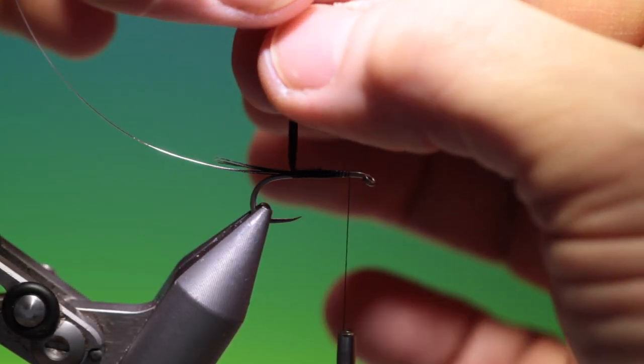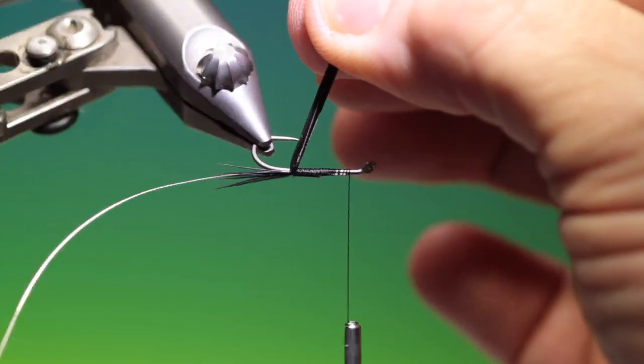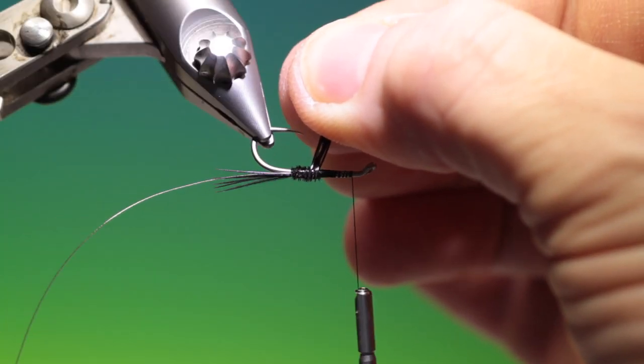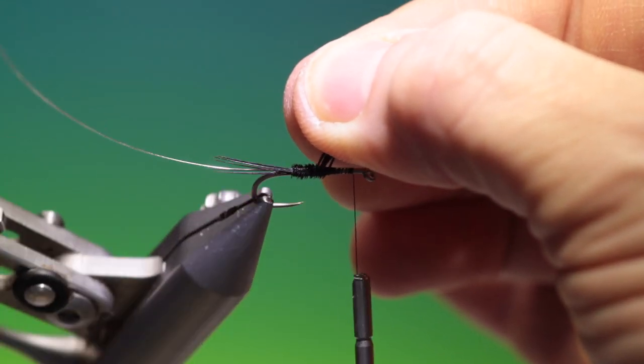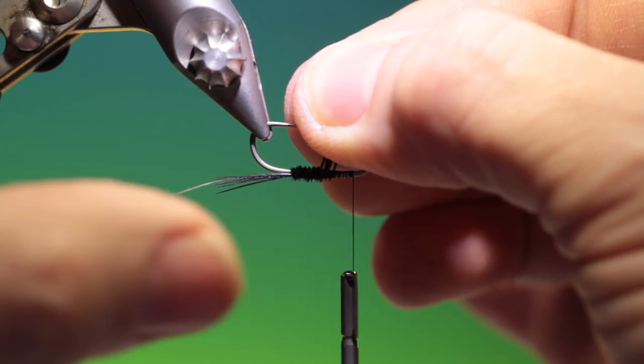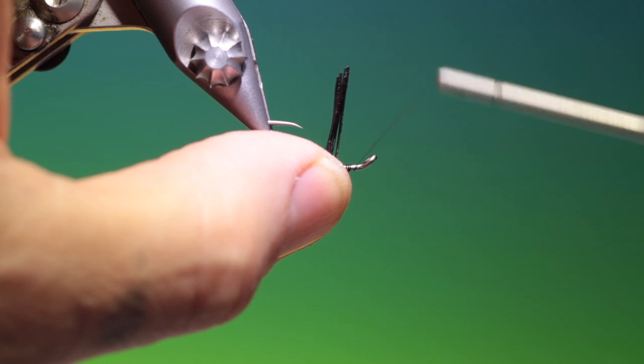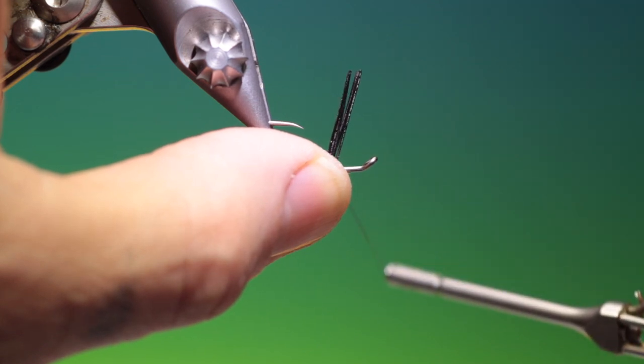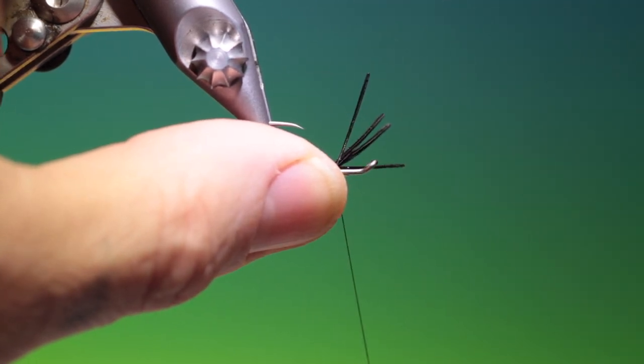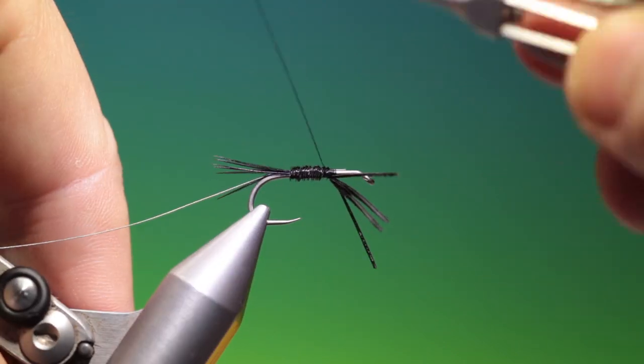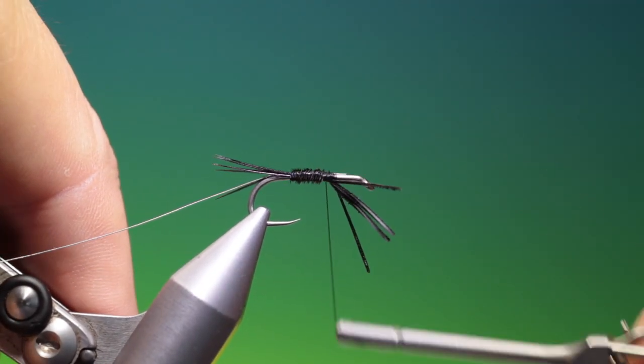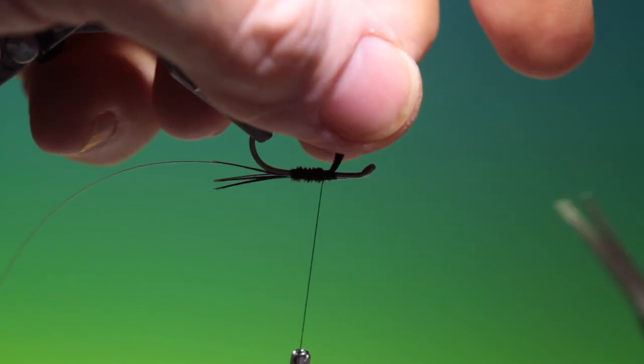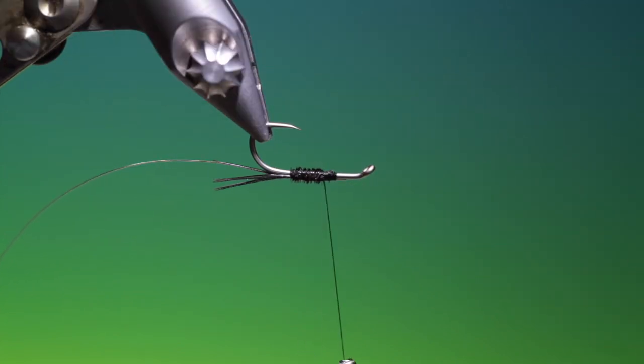And then we'll just hold our pheasant tail. Rewind that. Holding the tail in position with my thumb just while I catch the fibres in. I can go back here. Secure that. Turn my vise. Remove those.